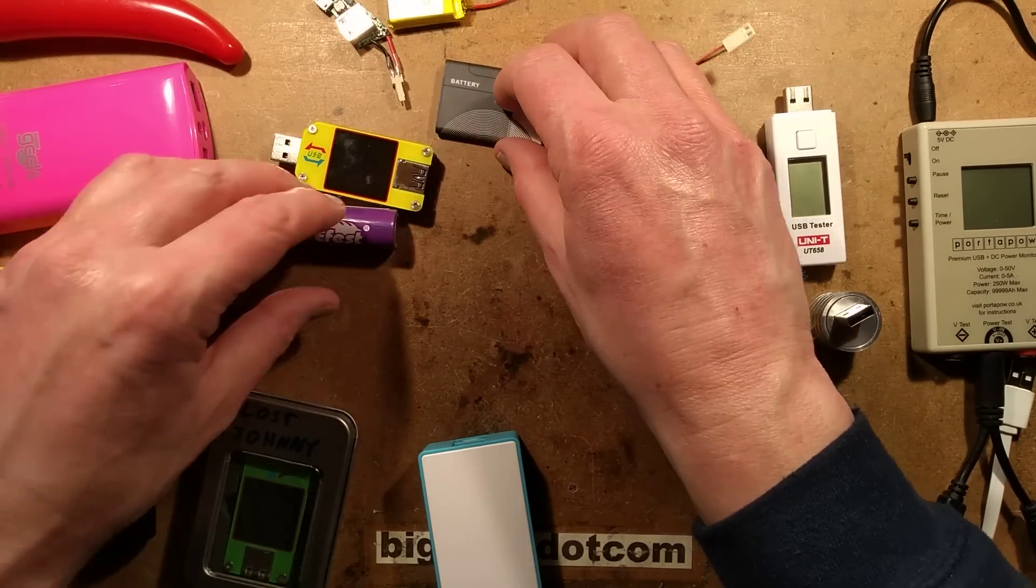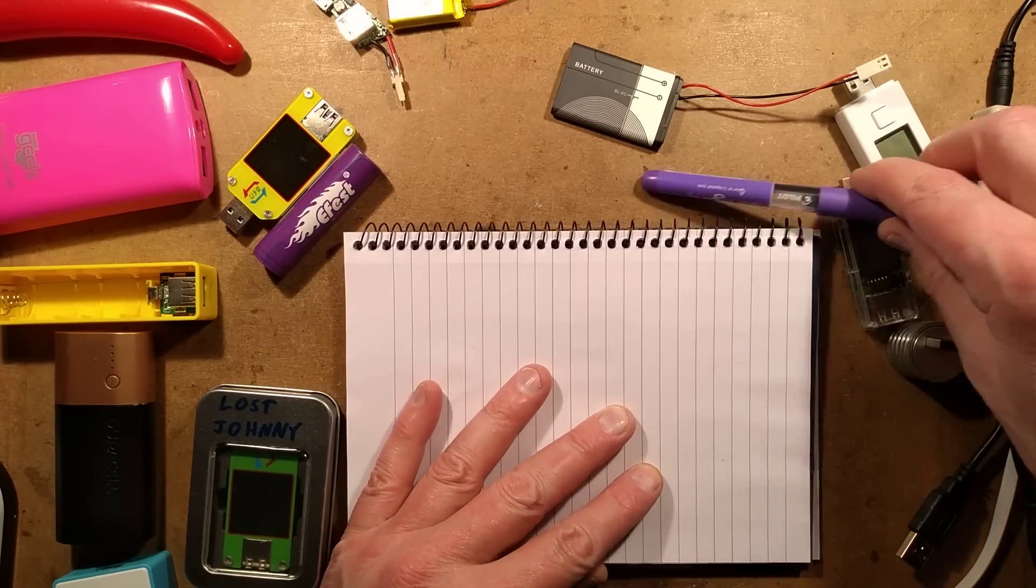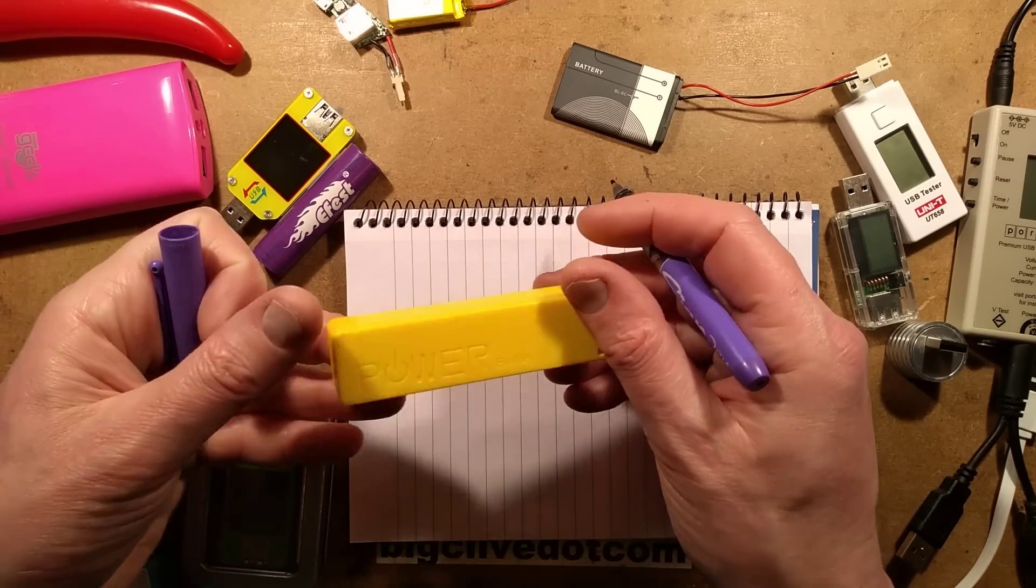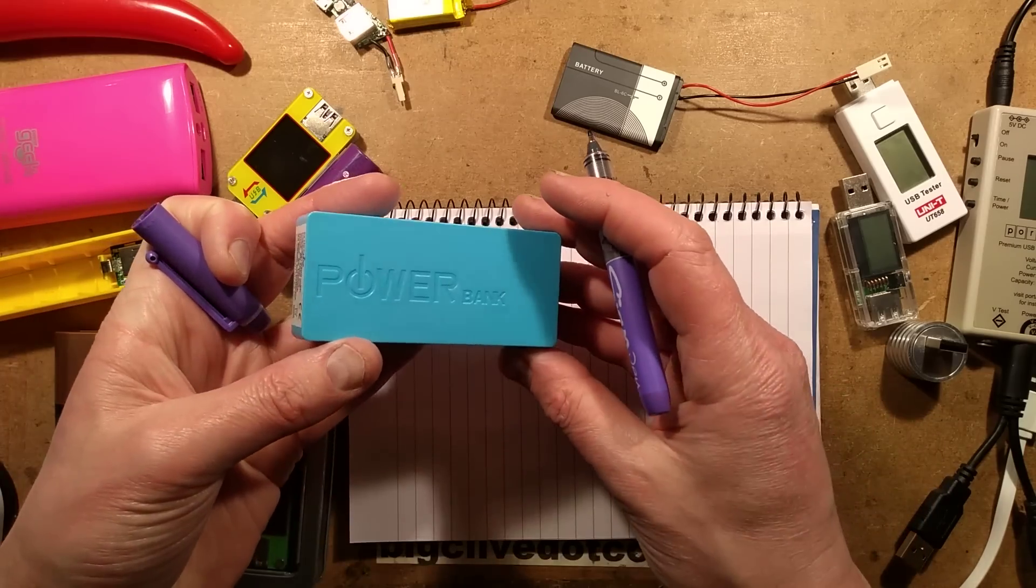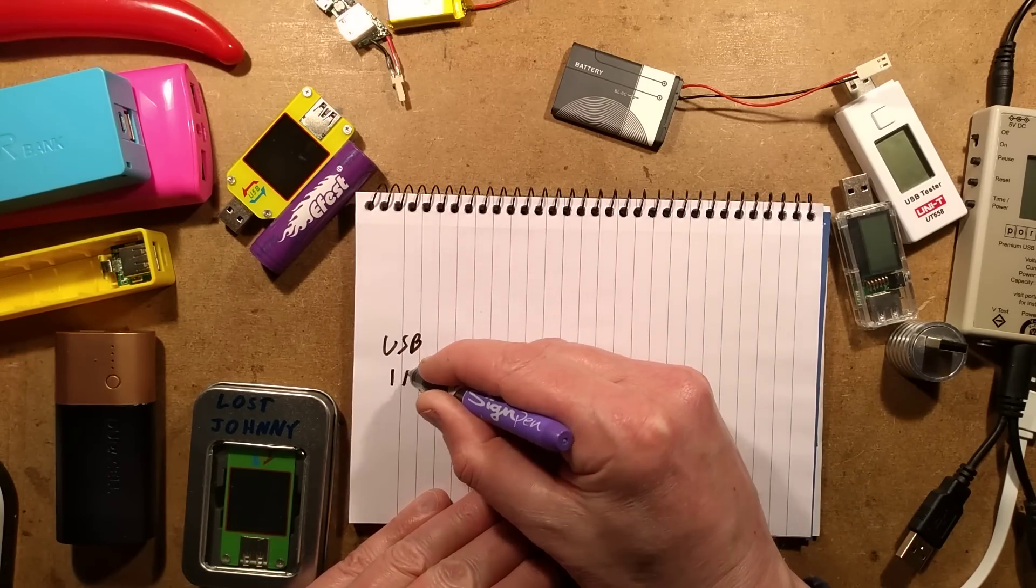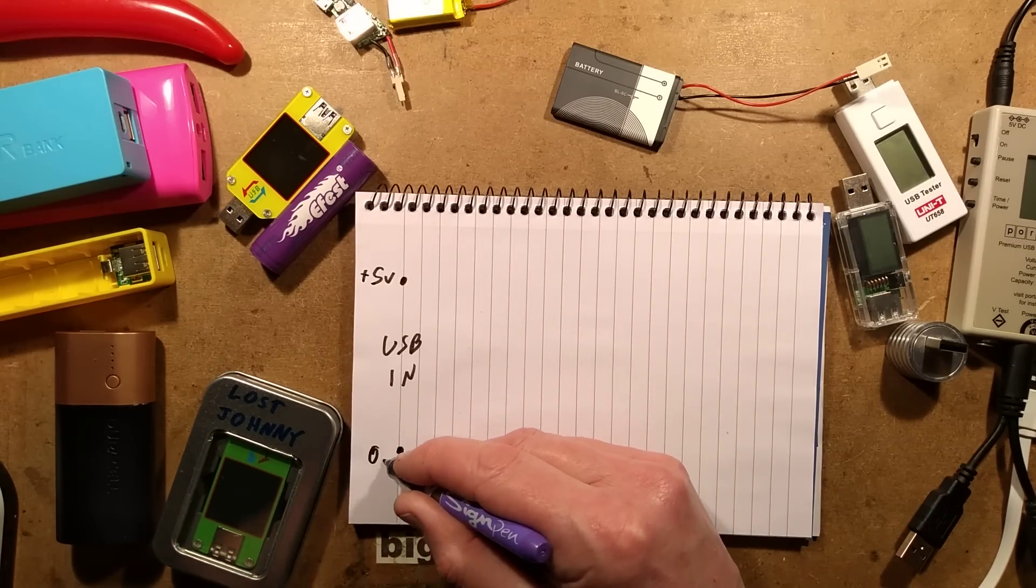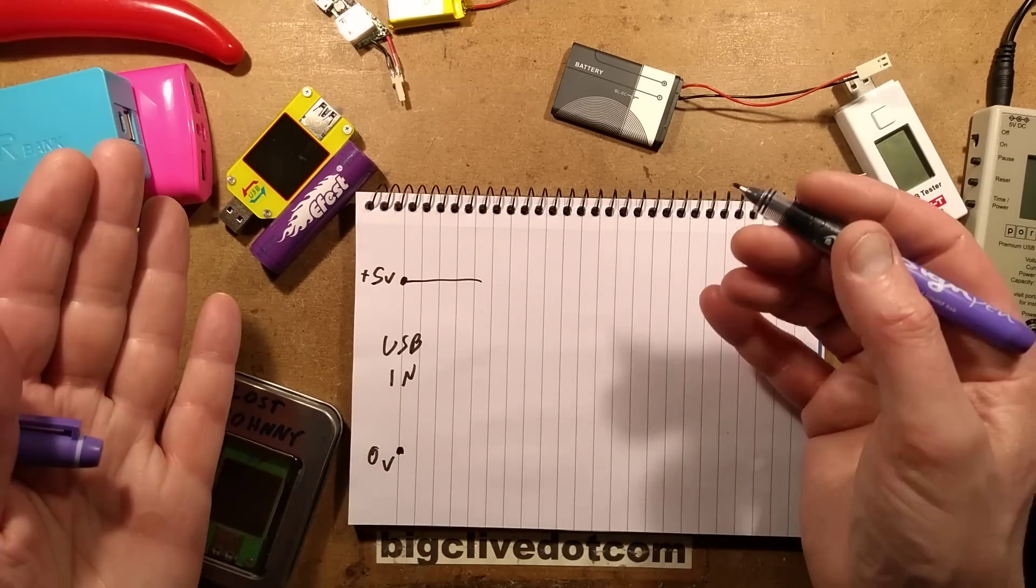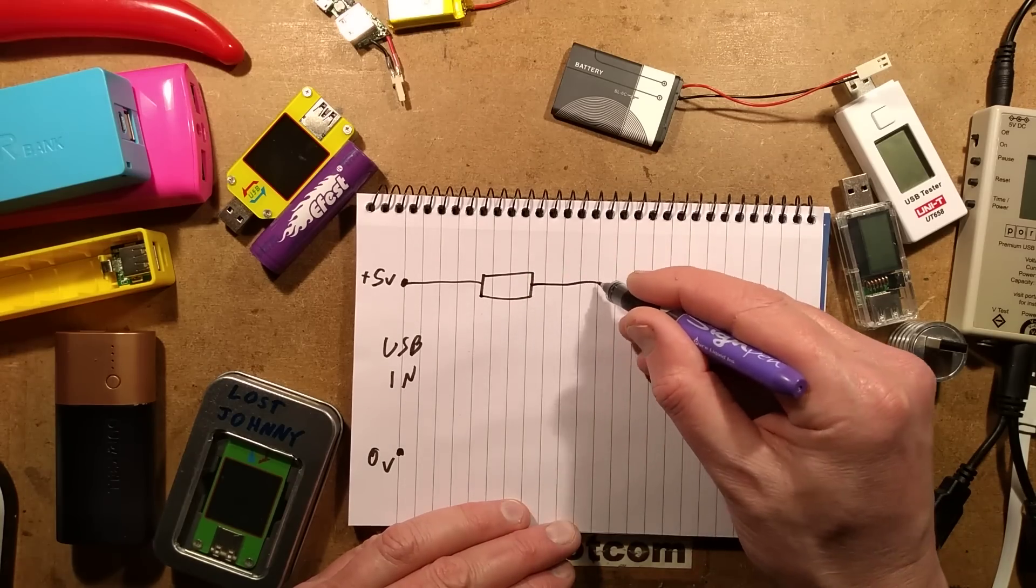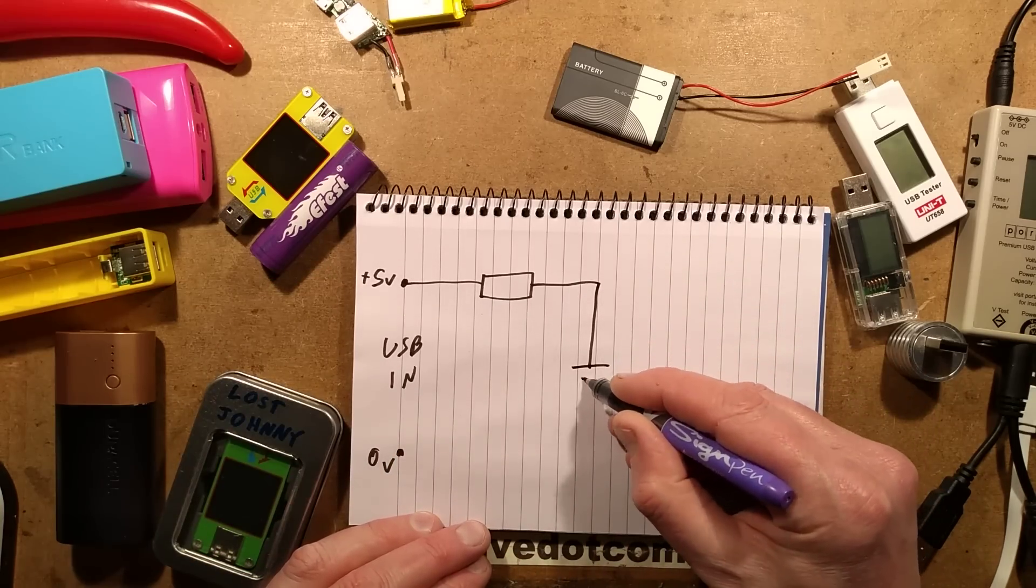When I actually test them, I work on the basis that the traditional USB power supply, like these little modules or this little power bank, have very simple circuitry. You've got the USB in, so that's plus 5 volts and 0 volt. It goes through a chip that acts like a variable resistor, and then it goes to the lithium cell that's being charged.